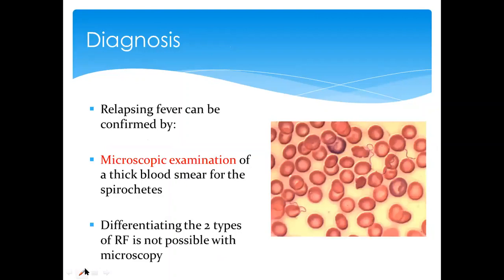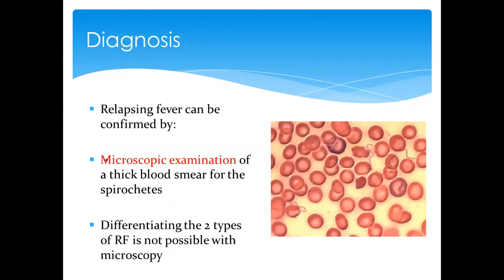Diagnosis is straightforward — it is done by microscopy of the blood, looking for spirochetes. The limitation of microscopy is that it cannot differentiate between tick-borne and louse-borne relapsing fever just from the microscopic images.